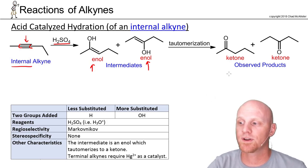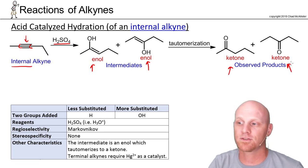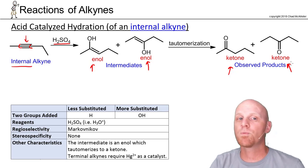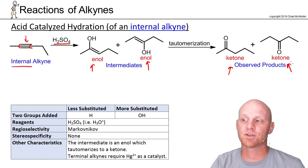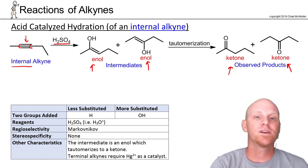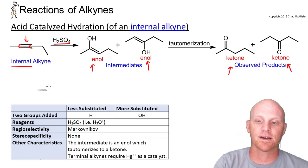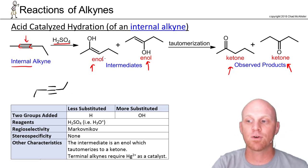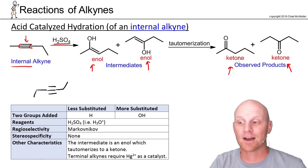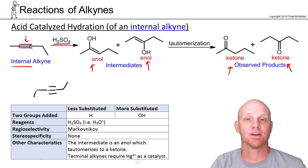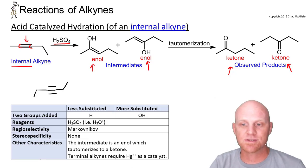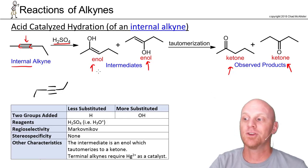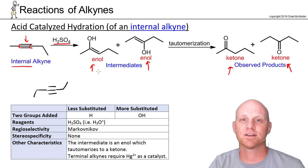Both of those enols tautomerize, giving you two possible ketones as your actual observed products. With an internal alkyne there's no Markovnikov preference — the carbons are equally substituted — so typically you get two products. The only exception is a symmetrical internal alkyne, where both enols and both ketones formed would actually be the same, giving just one product. For an asymmetrical internal alkyne, you'll get two keto products instead of one.